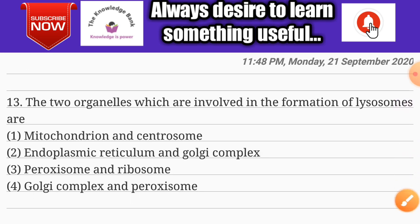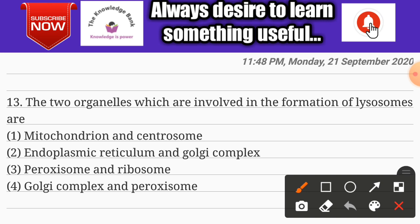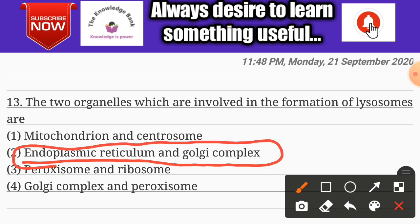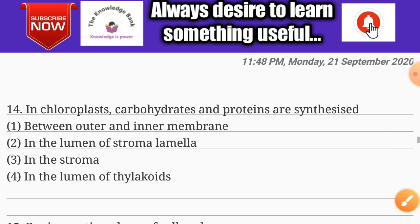Question number thirteen: the two organelles involved in the formation of lysosomes are — options are mitochondria and centrosome, endoplasmic reticulum and Golgi complex, peroxisome and ribosome, and Golgi complex and peroxisome. The correct answer is option two: endoplasmic reticulum and Golgi complex.